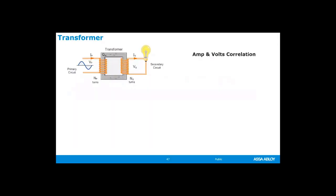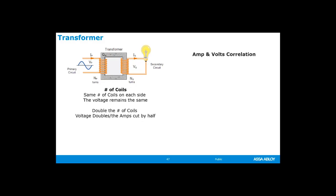The electromotive force is what makes the transformer possible. Here's a very simple look at how a transformer works. If both coils of a transformer have the same number of coils, the created current will have the same voltage and current as the original coil. If you double the number of coils on the receiving end, the voltage will double and the amperage will be cut in half. If you double the number of coils once again, the voltage will double again and the amperage will be cut in half again. When it's time to reduce the voltage, the number of coils on the receiving end will be half the number of coils of the producing end, therefore cutting the voltage in half and doubling the number of amps. This cannot be done with DC current, and that's exactly why Tesla's AC current became the standard.